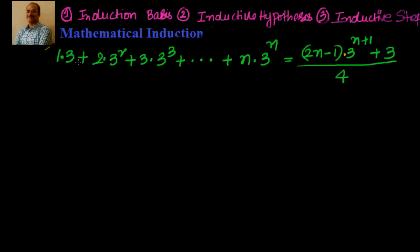For n=1, the first term is 1·3, which is n·3¹. The second term is 2·3², which is n·3ⁿ where n=2. Similarly, the third term is 3·3³, which is n·3ⁿ. So obviously the nth term is n·3ⁿ. We'll prove it for n=1, then assume for n=k, and prove for n=k+1 — the same logic we always use. Let's look at Step 1.